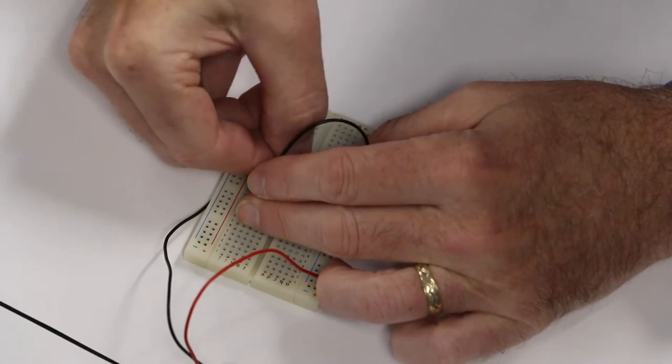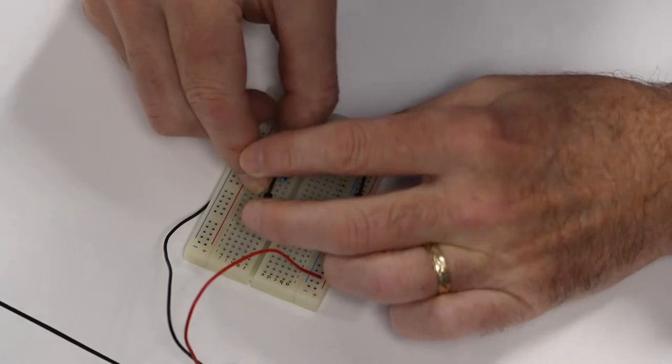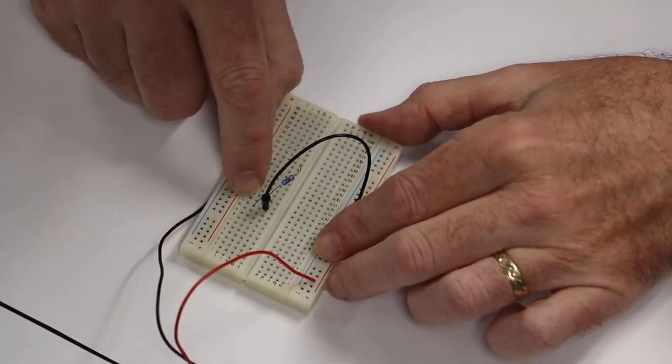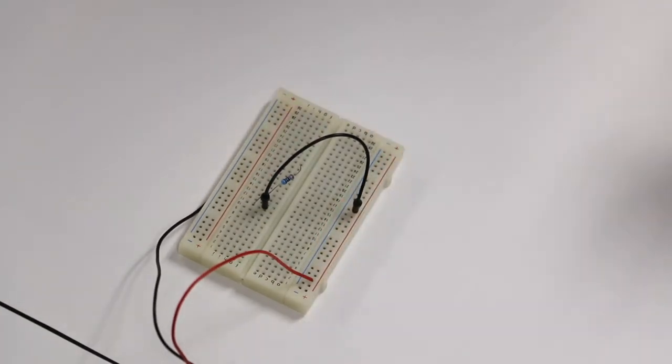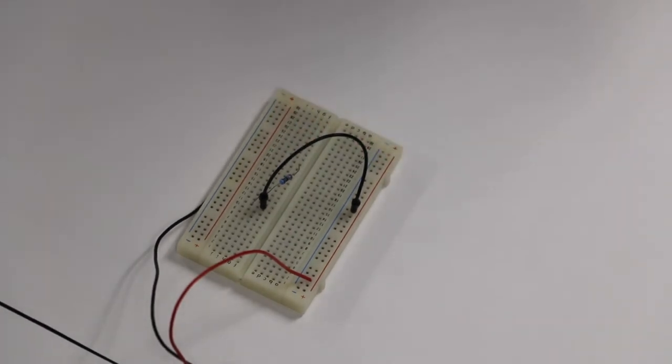And then I can just put it anywhere I want down here. It can be anywhere you want. If you notice, I put it in a hole two from the right side. But over here, I put it in a hole five from the right side, but it's in row 21.